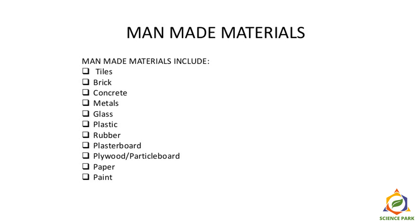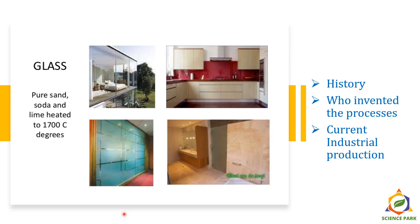Out of these man-made materials, let's study the glass industry, rubber industry, and paper industry. Do you know how glass is produced? We use pure sand (silica), soda ash, and limestone, and we heat the mixture to around 1,400 to 1,700 degrees Celsius — and that's how we produce glass. Let's see the history of glass making: who invented the processes involved, and the current industrial scenario and production of glass.